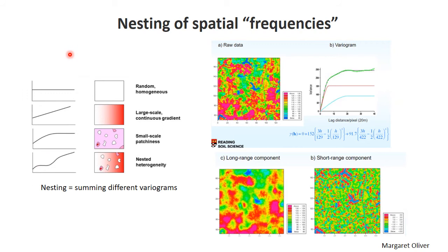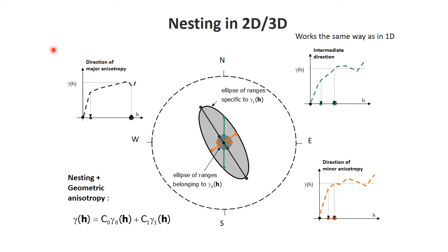The question now is: how do we model nesting of these spatial frequencies? If I have this combined observation and not the individual components, what would the variogram look like and how would I model it? In two dimensions, nesting works the same way but now I can have anisotropy in my nested components — meaning I may have various anisotropies nested together.